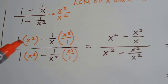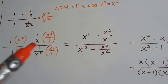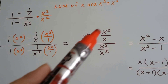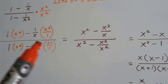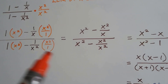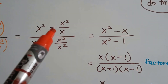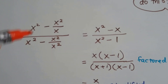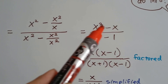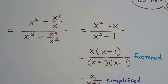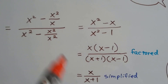What we get is 1 times x squared is x squared. And we get x squared over x, so we have x squared minus x squared over x for the numerator. For the denominator, we have x squared minus x squared over x squared. This becomes x squared minus x because we do the quotient rule — when we have an exponent of 2 and it's over an x, it just becomes x over 1. So now we just have x squared minus x. For the denominator, we've got x squared minus 1 because x squared over x squared makes a 1.